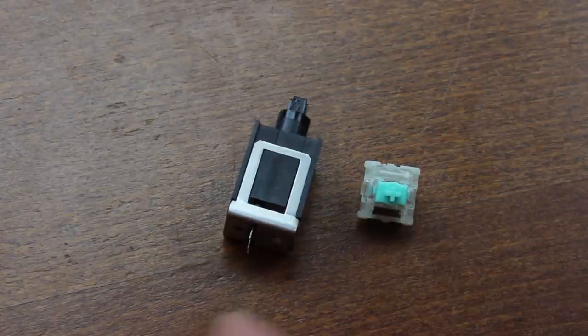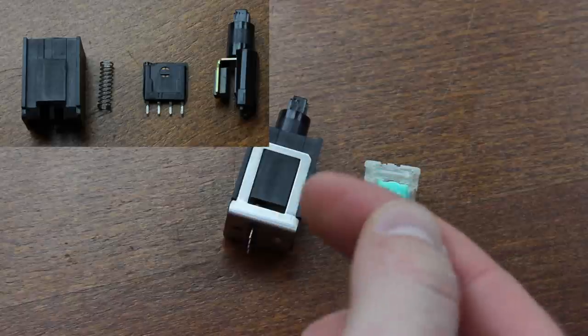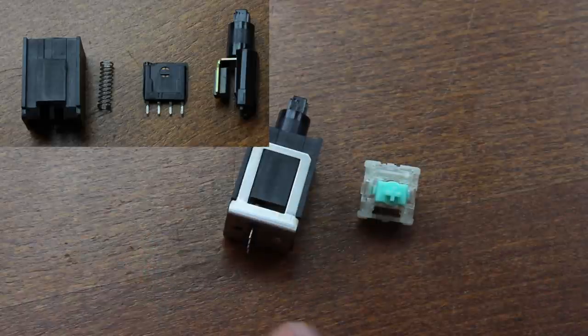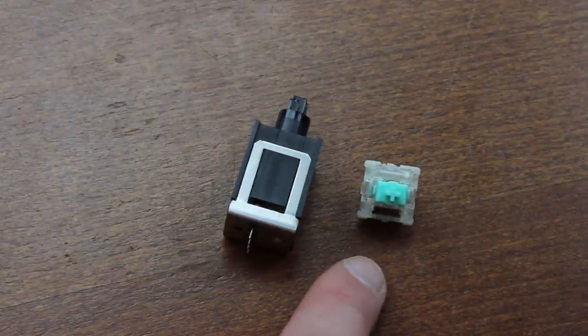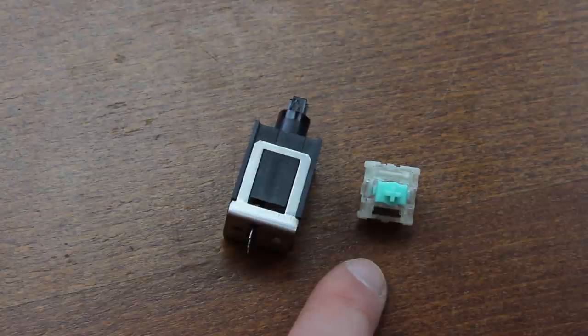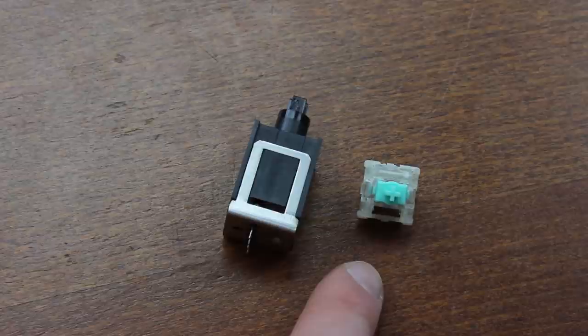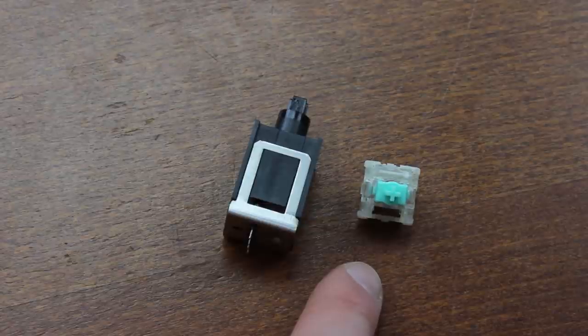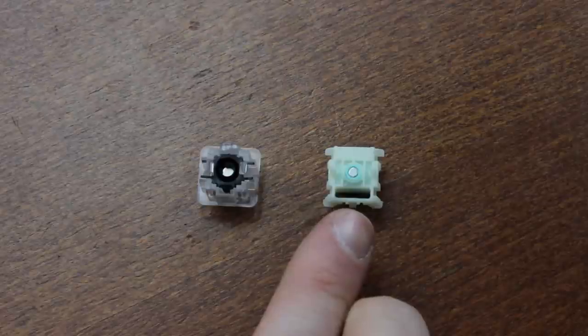Whereas the Lekker switch uses a longitudinal setup where the two elements are positioned along the travel axis. In their case, the sensing elements are surface mount components located on a PCB directly below the slider, while the magnet consists of a small round piece of neodymium alloy and it's embedded in the bottom of a circular slider.